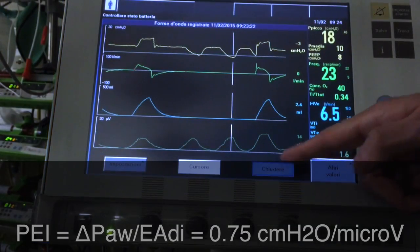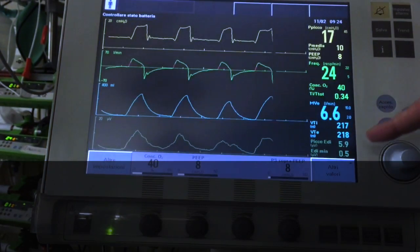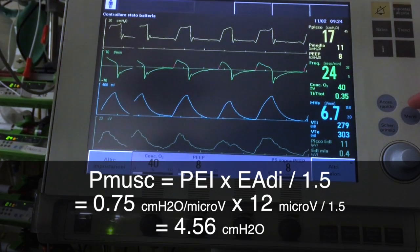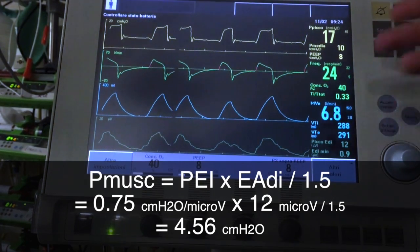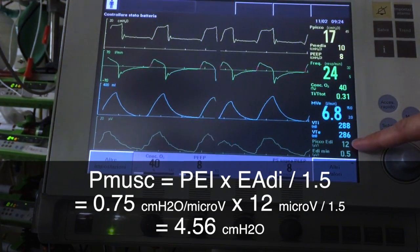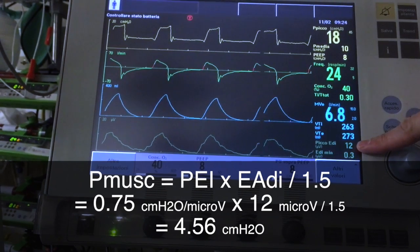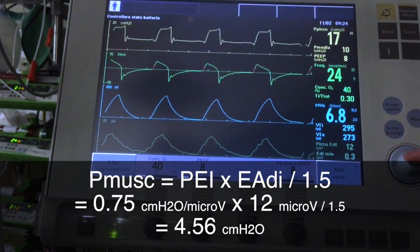In any moment during tidal ventilation, if we multiply PEI by the E-ADI and then divide it by 1.5, we obtain the pressure generated by the respiratory muscles. In this case, about 4.5 cm of water.